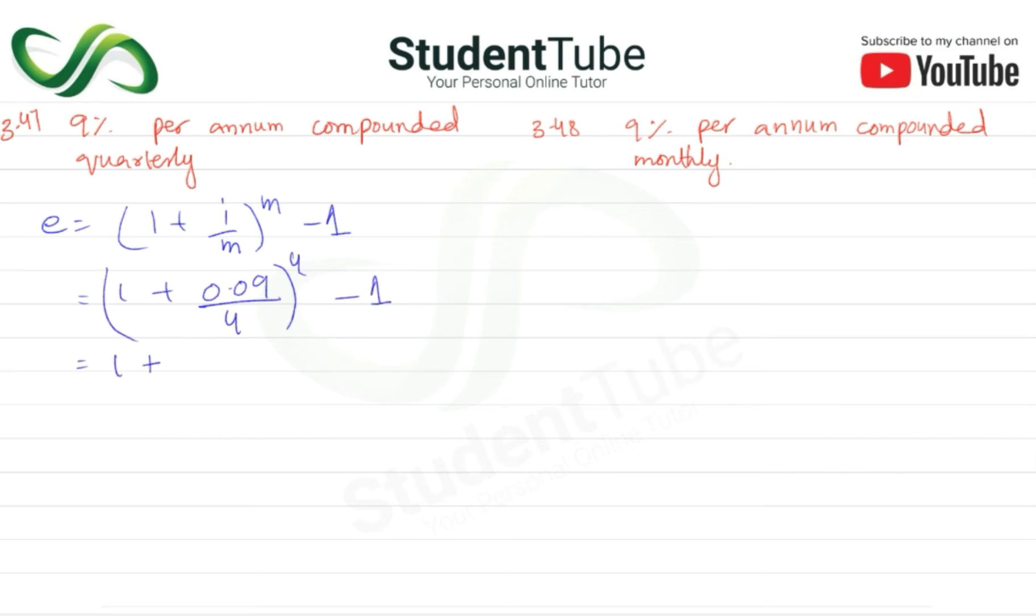So 1 plus here is 0.09 divided by 4, we will have 0.0225, 4 here is minus 1.